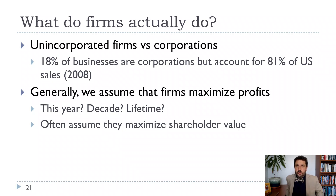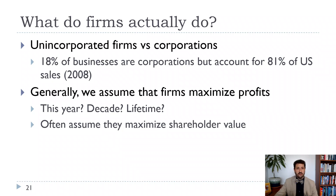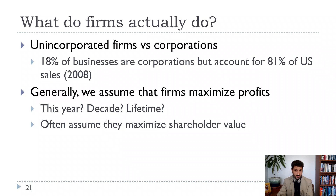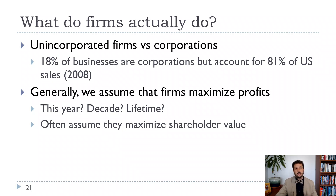Our main assumption in economics about firms is that they maximize profits. Do they always maximize profits? No, of course not. They are going to do other things — make investments, make donations to causes they think are important, although sometimes that's really just to maximize profits as well. But when we think about maximizing profits, we have to think about: are they maximizing this year's profits, profits over the next five years, ten years, forever? Even the largest firms that have been around a long time can't see into forever, so we have to think about what's the best way to model it.